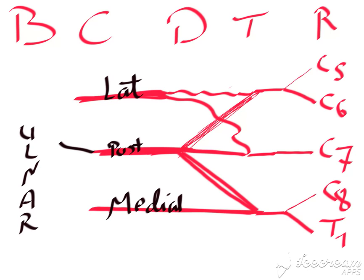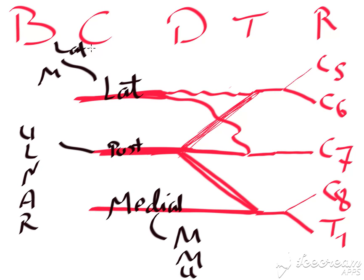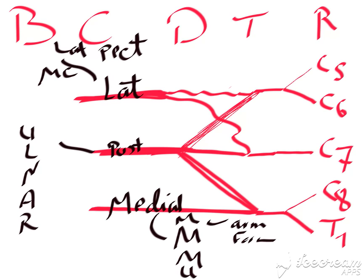The medial cord will give the medial cutaneous nerve of the arm, medial cutaneous nerve of the forearm, and the ulnar nerve. Also the medial cord gives the medial pectoral nerve.